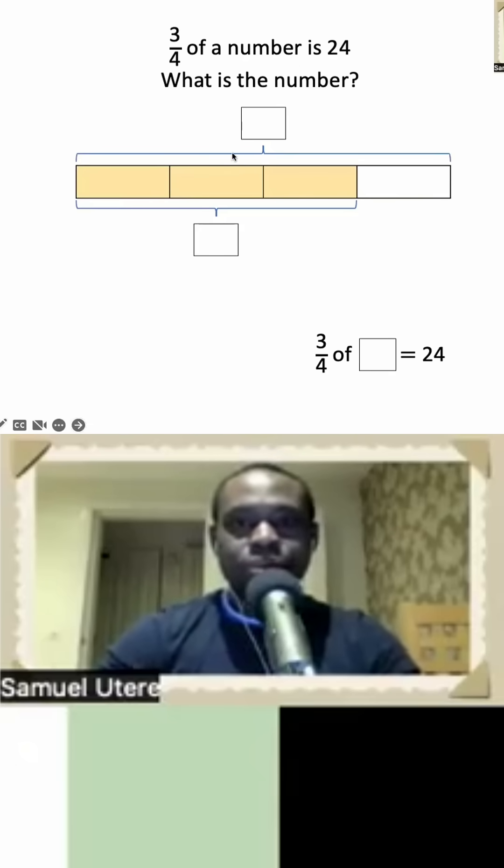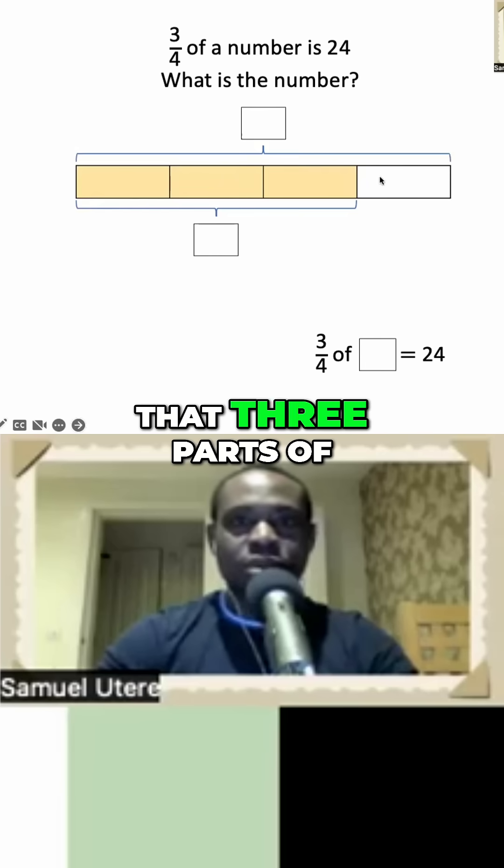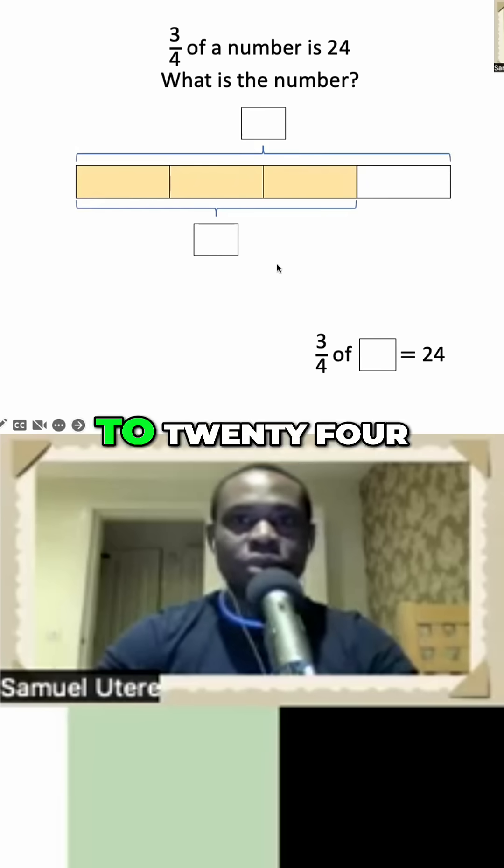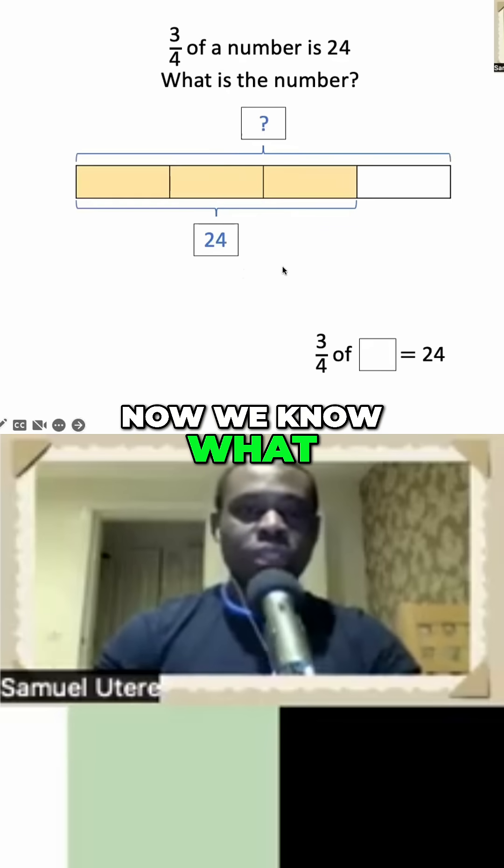So now we'll divide 24 by three because we're told that three parts of this four is equal to 24. Now we know what each part is worth.